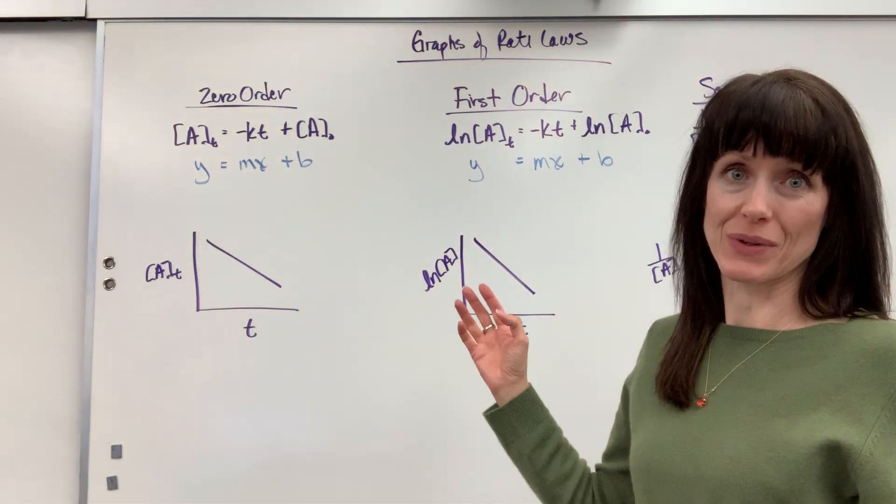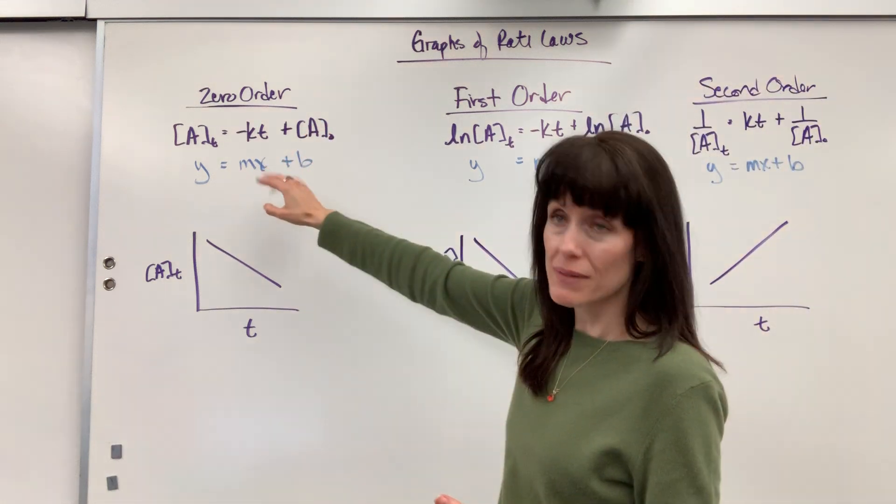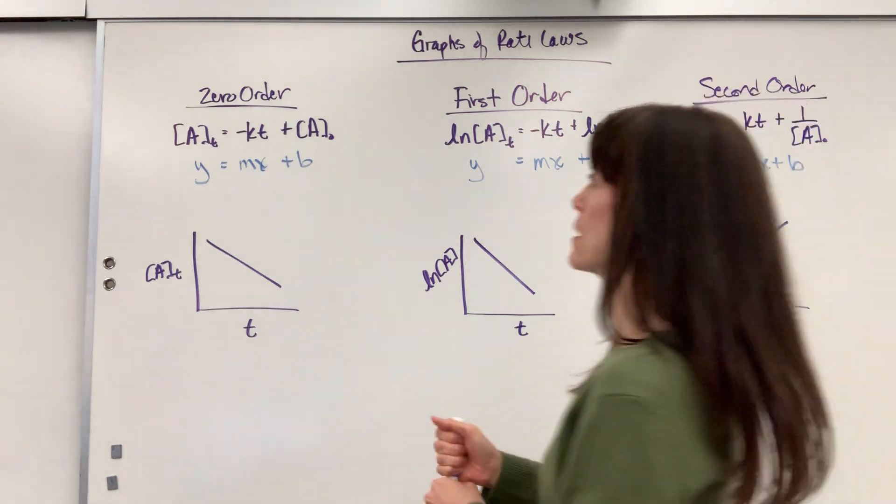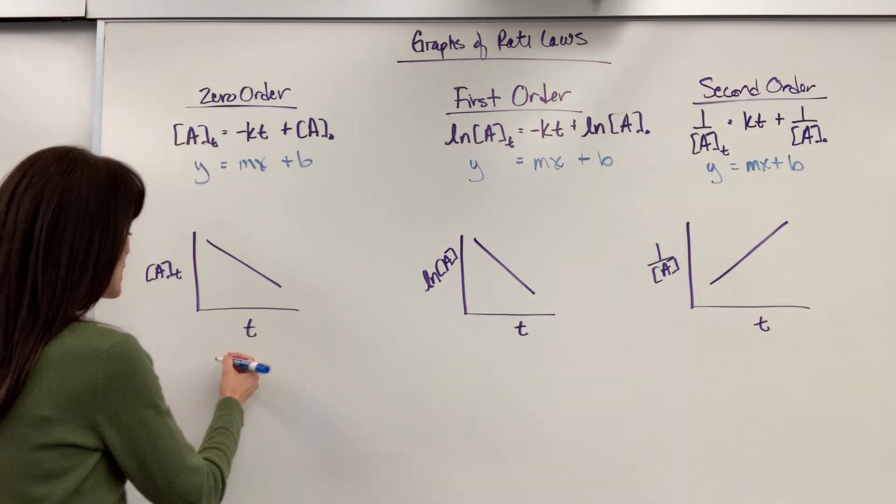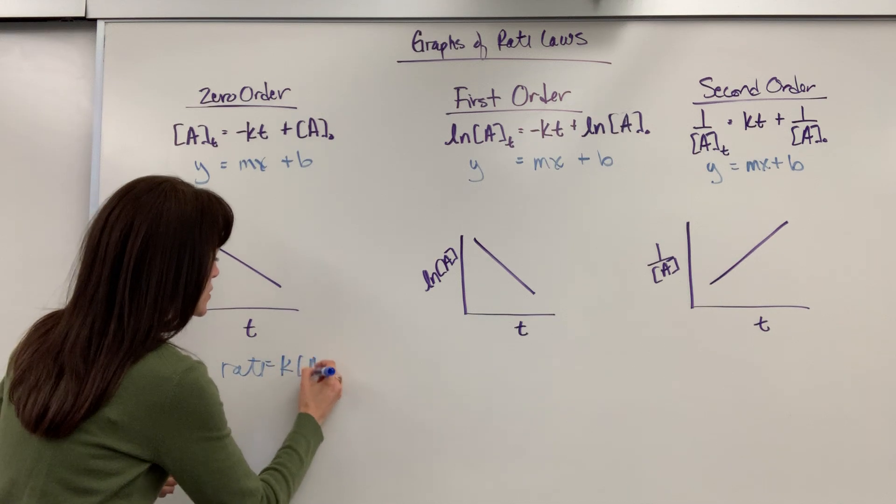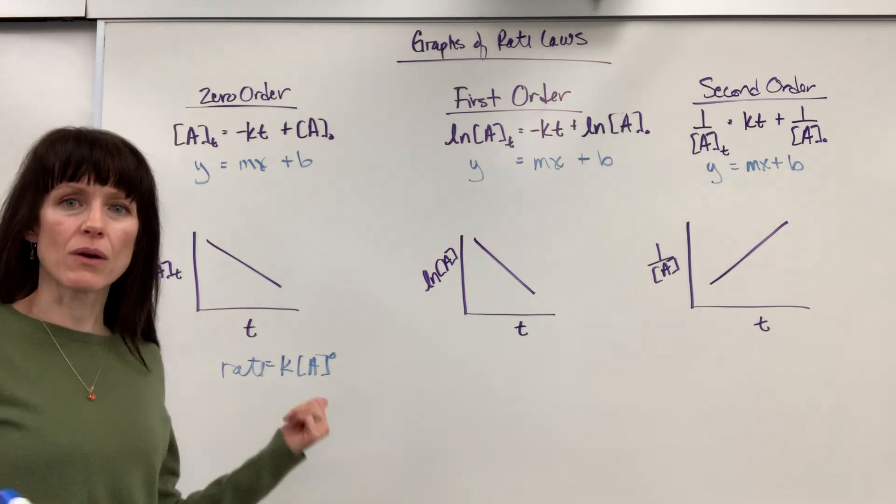We have three different orders that we're going to look at: a zero-order reaction, first-order reaction, second-order reaction. Now remember, when I'm saying order, this would be something like rate equals K times the concentration of A to the zero-order.